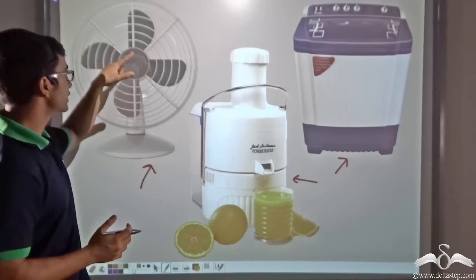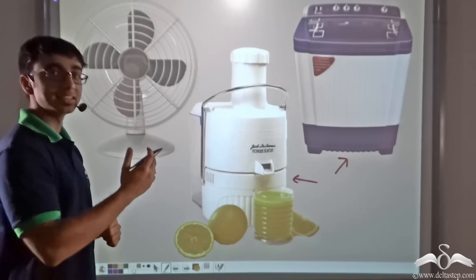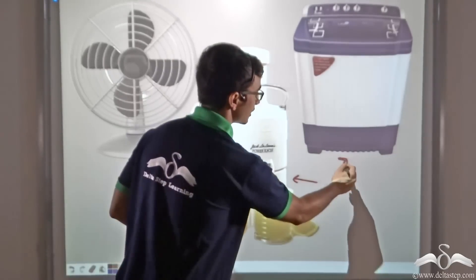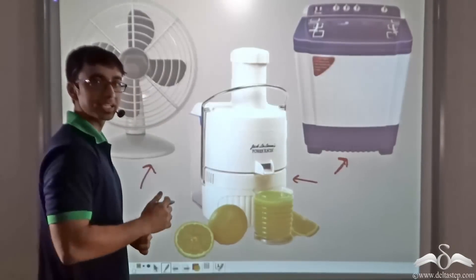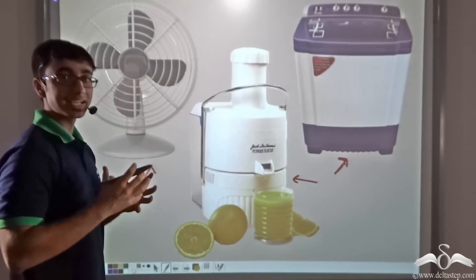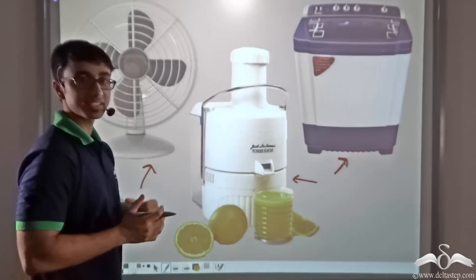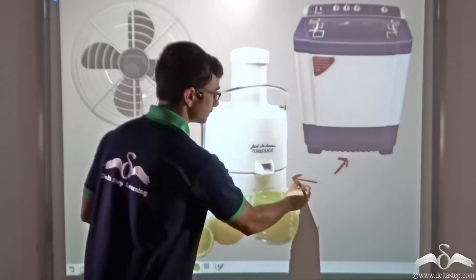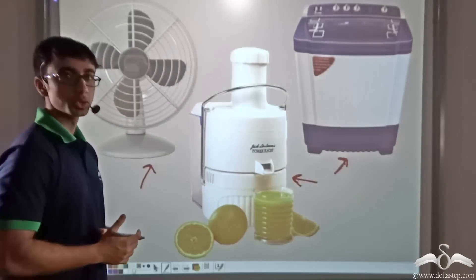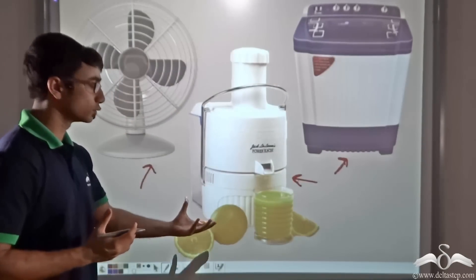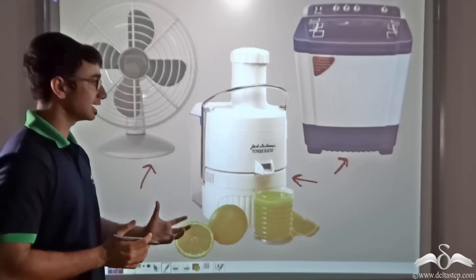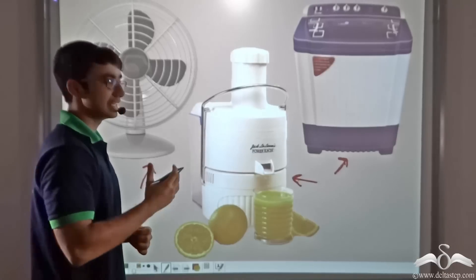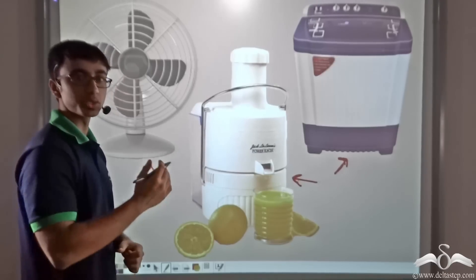In the table fan, the blades rotate and these rotating blades give us the air. In the washing machine there are also certain kinds of blades that rotate and ensure that the clothes placed in them get washed efficiently. Similarly in the juicer there are certain blades which are responsible for reducing the fruits to their pulp and thus bringing out the juice. So in all these things there is a certain part that rotates.